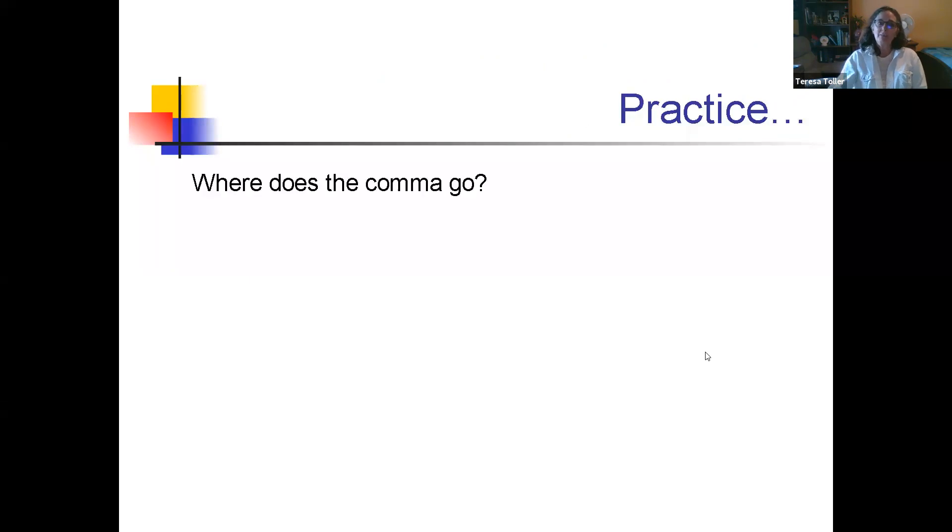So you practice. Where does the comma go? If you said after mall, then you would be correct. If we go to the mall is your introductory phrase. We will be late for the movie is a complete sentence by itself. One other thing that is a clue is if when you say this out loud, you will often automatically pause where there should be a comma. If we go to the mall, we will be late for the movie.